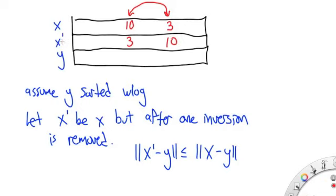So x prime is a vector that is a copy of x except we've actually swapped out one of the inversions. And what we'd like to show is that the distance between x prime and y is smaller than or equal to the distance between x and y. So by making this swap, by making them more sorted, we've made them no further apart, possibly closer together.